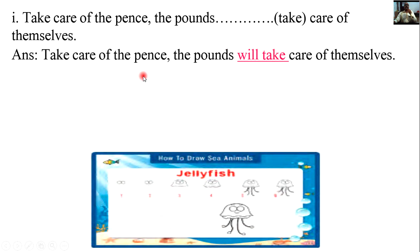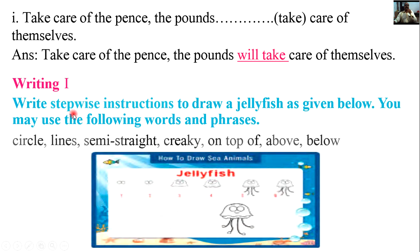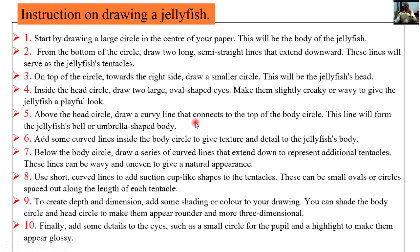Writing section: write stepwise instructions to draw a jellyfish. Number one: start by drawing a large circle in the center of your paper — this will be the body of the jellyfish. Number two: from the bottom of the circle, draw two long semi-straight lines that extend downward — these lines will serve as the jellyfish tentacles.